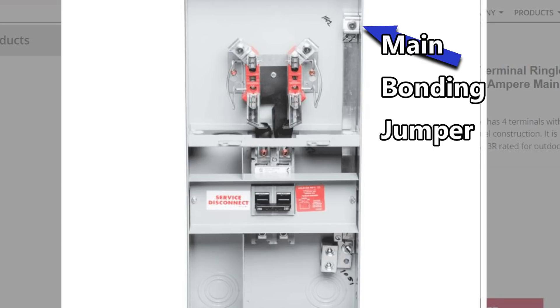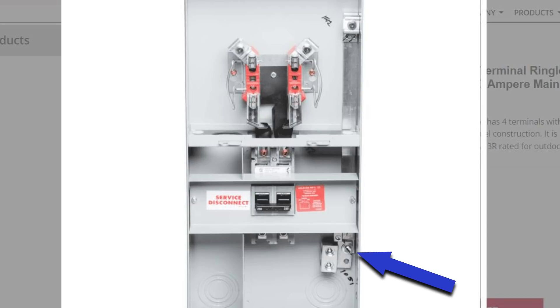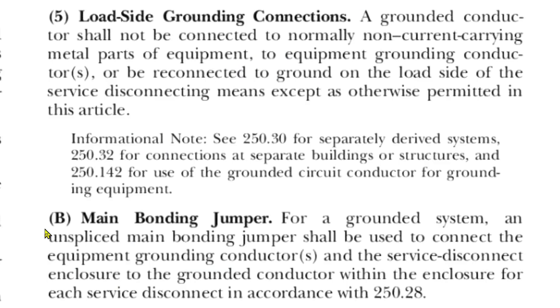Here we are at NEC 2020 250.24 B, main bonding jumper for a grounded system. An unspliced main bonding jumper shall be used to connect the equipment grounding conductor or conductors and the service disconnect enclosure to the grounded conductor within the enclosure for each service disconnect in accordance with 250.28.